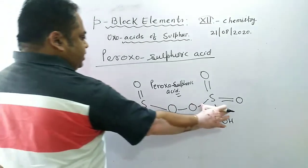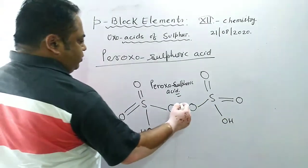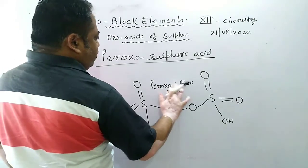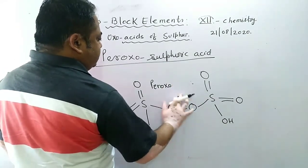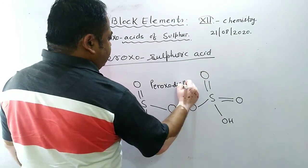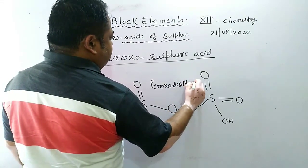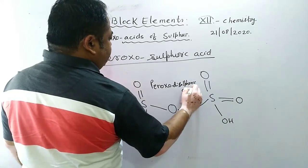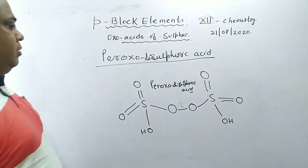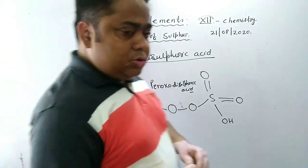This is called peroxosulfuric acid. Since two sulfuric acid units are there, means if you give water it can break from here, so we will put one more prefix: peroxodisulfuric acid, or also disulfuric acid. So this was all about the structure of the oxoacids of sulfur.